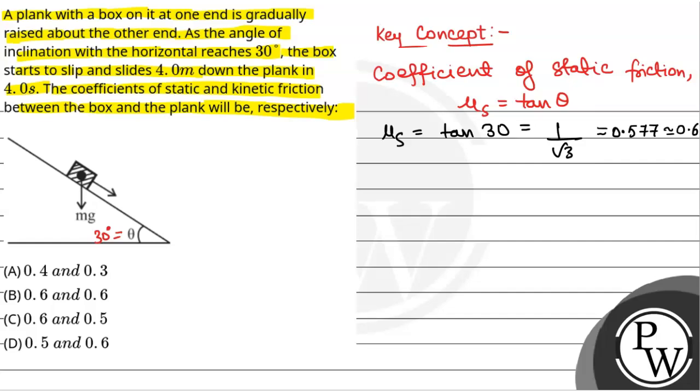Now, for kinetic friction, we will see the forces acting on the block. This will be Mg cos theta, where theta is 30 degrees. This will be Mg sin theta. Normal reaction will be acting upward and kinetic friction will be acting opposite to Mg sin theta.